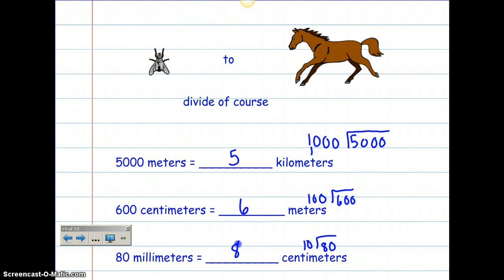Just remember, everything goes up by 10s or down by 10s, so it's super easy when doing multiplication and division, unlike customary units of measurement. Horse to fly, multiply. Fly to horse, divide of course. Remember your metric units of measurement.